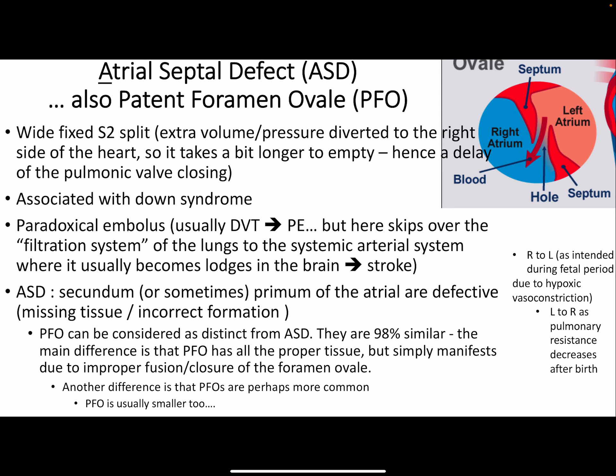With an ASD, you can get a paradoxical embolus. About 90% of clots come from the deep veins of the legs — they travel through the venous system into the right atrium, right ventricle, and into the lungs, where they're usually caught as a pulmonary embolism. But if there's an ASD, the embolus can flow from the right atrium to the left atrium, then to the left ventricle, and get pumped up through the aorta to the brain. So many people will get strokes as a result.